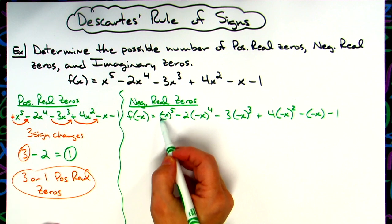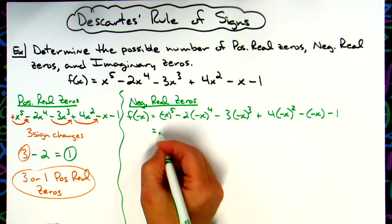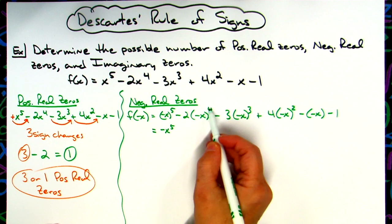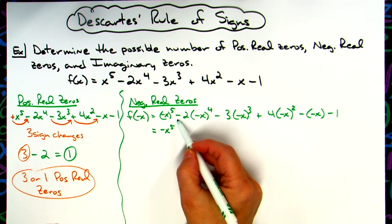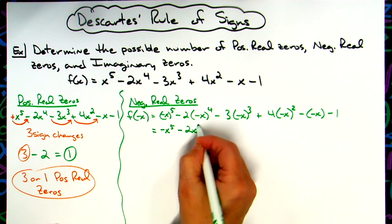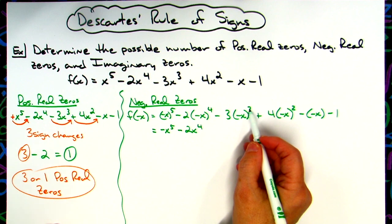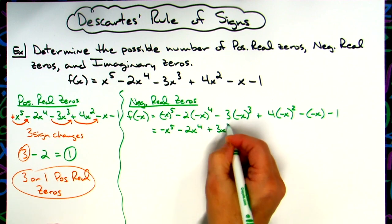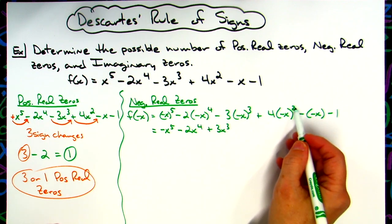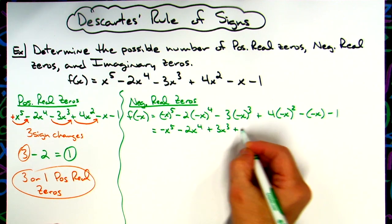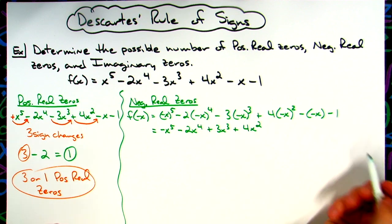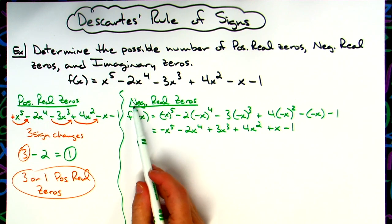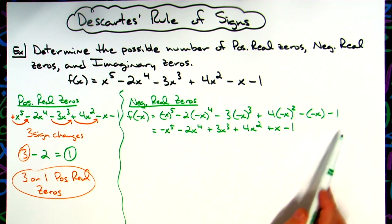Now I'm going to simplify. A negative one raised to an odd power will still give a negative, so this term will be negative x to the fifth. A negative raised to the fourth power makes it a positive coefficient, and the positive times the negative two in front leaves it negative 2x to the fourth. A negative raised to an odd makes it negative, so negative times the negative in front turns that to positive 3x to the third. A negative raised to an even power turns it positive, times the positive in front gives positive 4x squared. Negative times negative makes it positive, and then minus one.